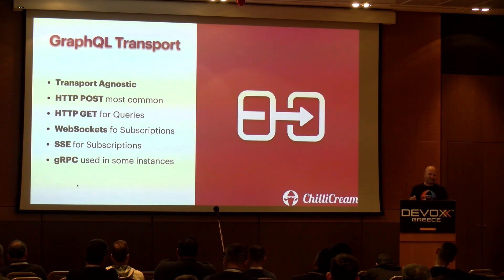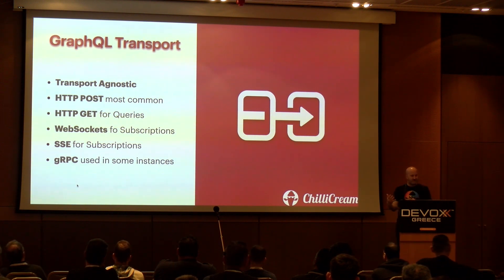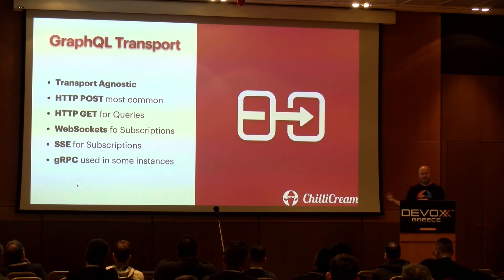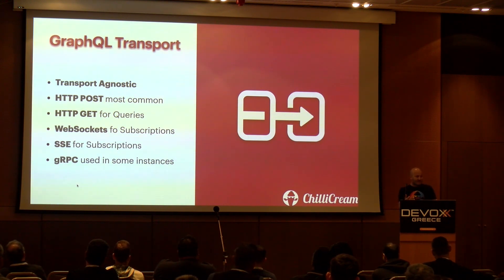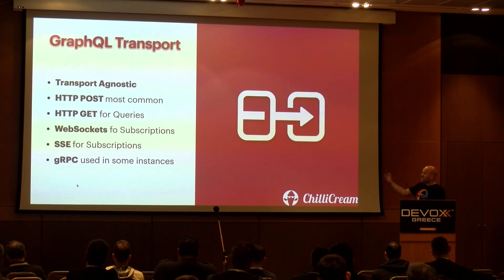GraphQL is designed to work with HTTP 1.1 but also newer HTTP versions with additional features. Because Facebook has clients in developing countries, they always ensure it works with even very old HTTP specs. You can also use HTTP GET for queries — side-effect-free things — while mutations don't work over GET. For real-time data there are WebSockets or HTTP SSE, and in advanced cases even gRPC could be the transport.